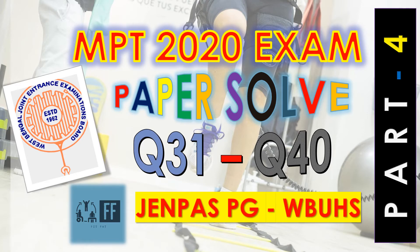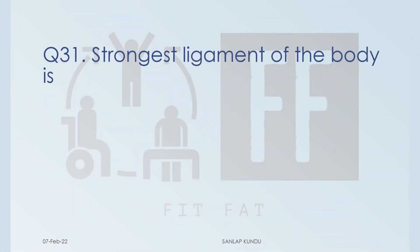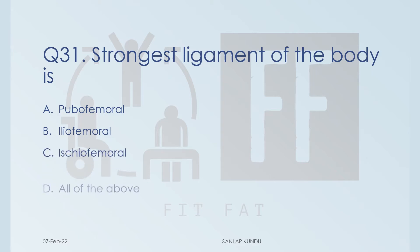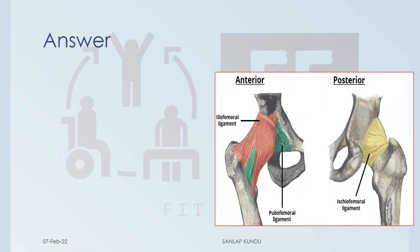If you are new to this channel, please watch the previous three parts by clicking the 'I' button above. Question number 31: the strongest ligament of the body. Options are: A) pubofemoral, B) iliofemoral, C) ischiofemoral, and D) all of the above. In this figure you can see the ligaments of the hip joint.